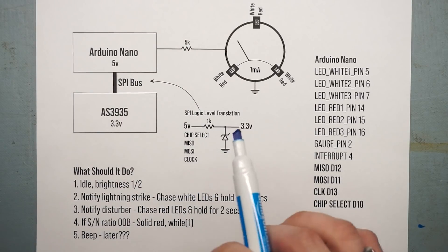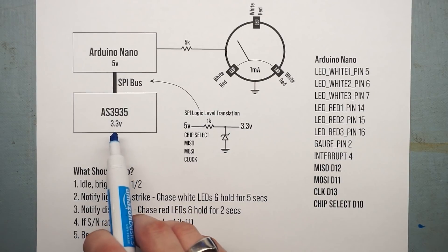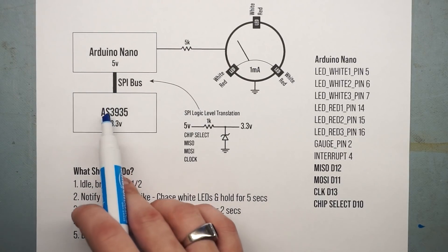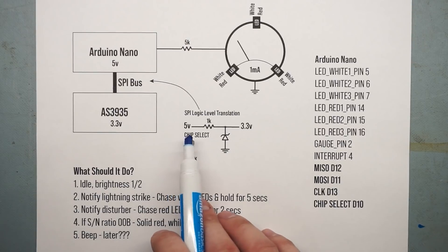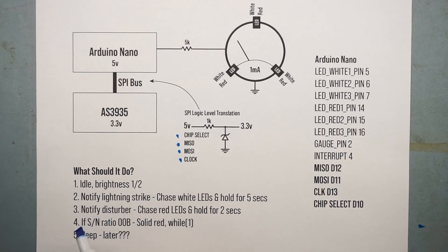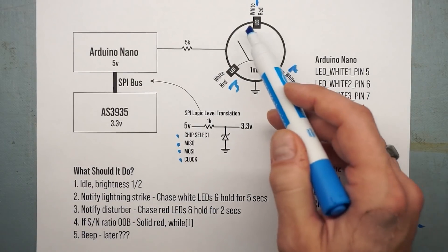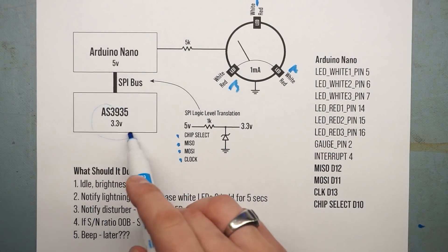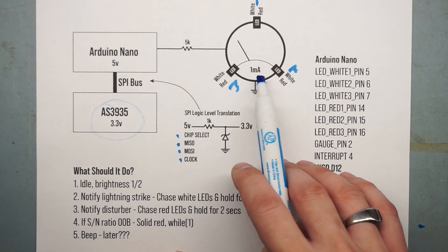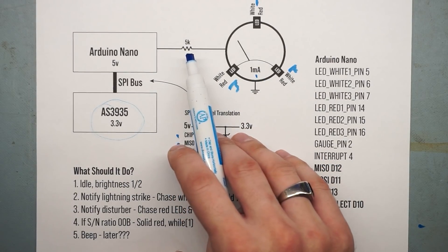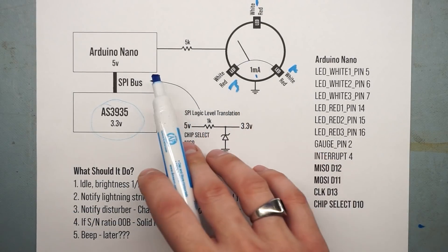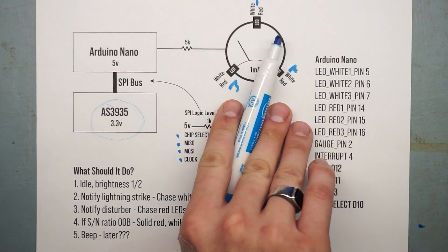We're going to have to do some logic level translation between the two, using a resistor and a Zener diode. Signals coming from the 3.3-volt side going to the Nano don't require translation, but going from the Arduino Nano's 5 volts to the 3.3-volt chip, if we keep banging it with 5 volts we'll eventually damage the GPIO pins. So we clip it using a Zener circuit for chip select, MISO, MOSI, and clock. We have three LED pairs — white and red for each. The analog gauge will tell us how far away the estimated lightning strike is. This is a 1-milliamp meter; 5 volts from the Arduino divided by 5K gives us 1 milliamp for full deflection, driven with a PWM signal. The closer the distance, the closer the needle will be to 255.